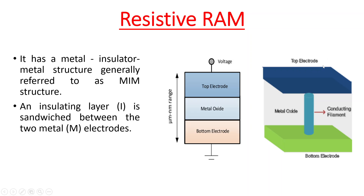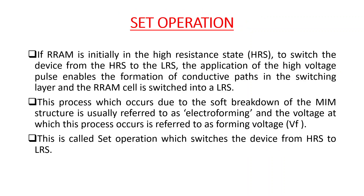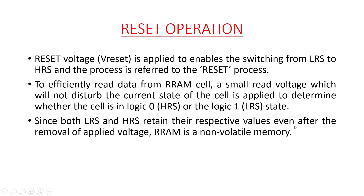In the set operation we switch the device from HRS to LRS. If we apply a voltage at the top electrode, initially there will be no conducting filament, but upon applying the voltage this conducting path will be formed and it will switch from high resistance state to low resistance state. In the low resistance state the current can flow from the top electrode to the bottom electrode through the conducting path.